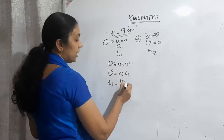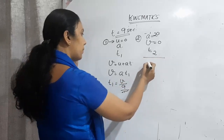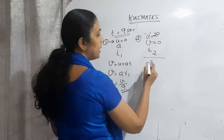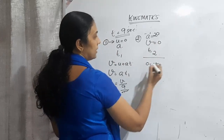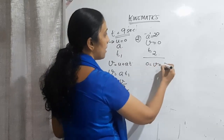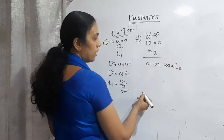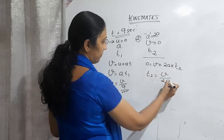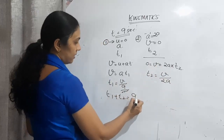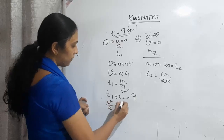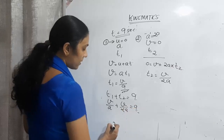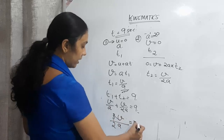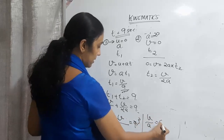Now T1 + T2 = 9. Substituting: v/a + v/(2a) = 9. Taking LCM 2a: 3v/(2a) = 9. Therefore v/a = 6. Since T1 = v/a, the duration of uniform acceleration T1 = 6 seconds.